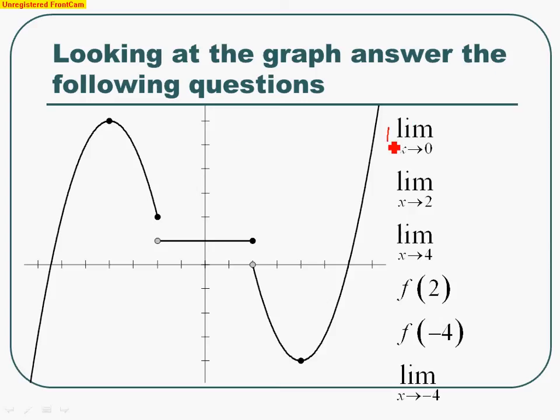First question: what's the limit as x approaches 0? So you want to go to 0 on your x-axis and look from the left and right side. I like to draw little arrows, do a little finger test where you're showing - are they approaching the same height? And you'll see yes, they are approaching the same height. You can tell exactly that that height is 1. So the limit as x approaches 0 would be 1.